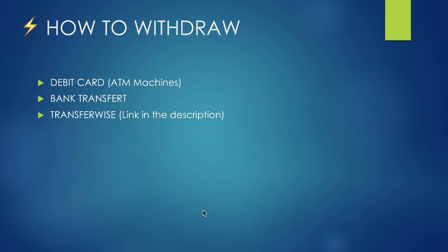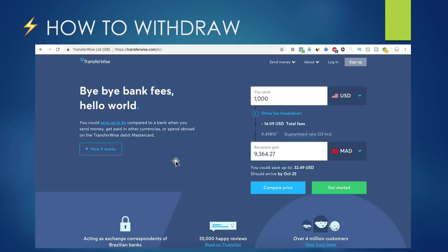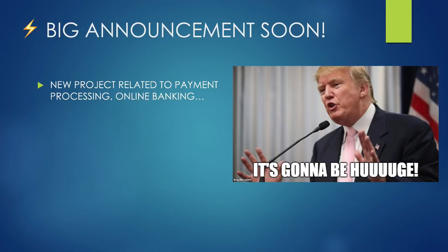Once you get your bank account and want to withdraw your money, here are your options: you can use the debit card to withdraw at an ATM or pay online, you can do a bank transfer to your local bank account — though personally I find that a pain with some fees — or you can use TransferWise to transfer from your US bank account to your local bank account at very low fees. You'll find the link below.